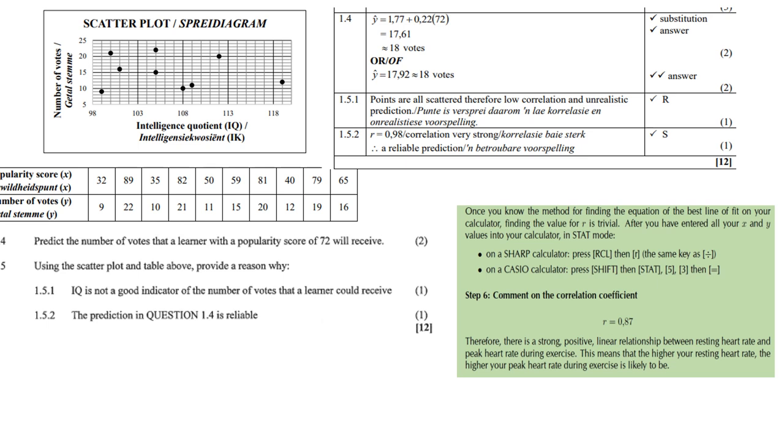So at 1.4 predict the number of votes that a learner's popularity of a score of 72 will receive. So what you do is then use a formula for the least square regression you've obtained in the previous question. And then you just do your substitution of 72 into the x value and you get 17.61 which will round up to 18 votes.